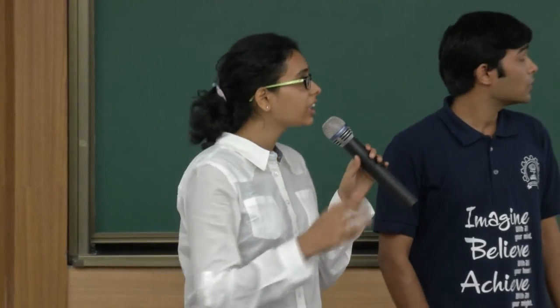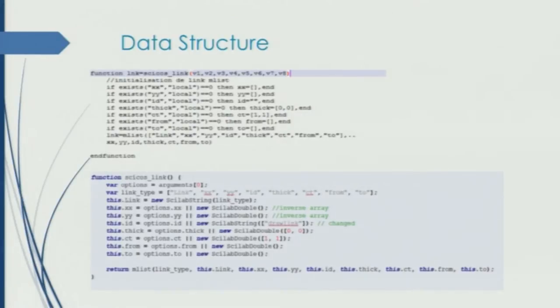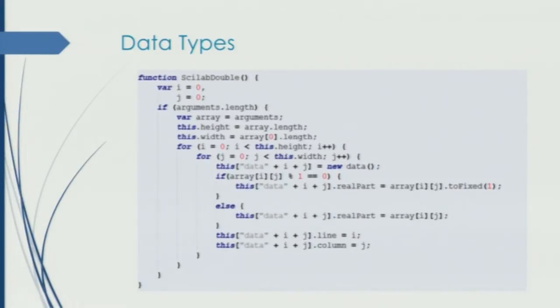There are various basic blocks which cannot be converted by the converter because these are the basic building blocks. There are many data structures like Scilab links, Scilab blocks, and some others. These have been created manually. You can see the Scilab file for the Scilab link and the equivalent JavaScript function. It uses Scilab double and other such data types which we have also implemented. Scilab double is used to store matrices of double type. We made our own data types to make them more familiar to Xcos.